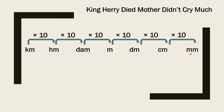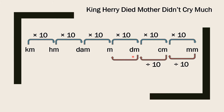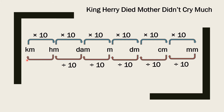What if we need to convert lower units to higher units? The opposite operation of multiplication is division. So whenever you need to convert millimeter to centimeter, divide by 10. Centimeter to decimeter — divide by 10. Decimeter to meter — divide by 10. Meter to decameter — divide by 10. Decameter to hectometer — divide by 10. And hectometer to kilometer — divide by 10.